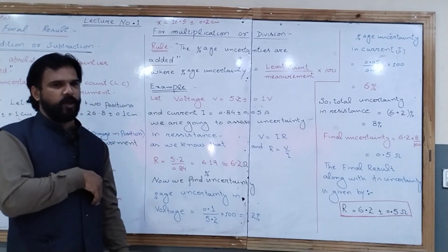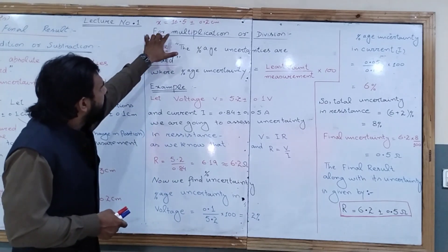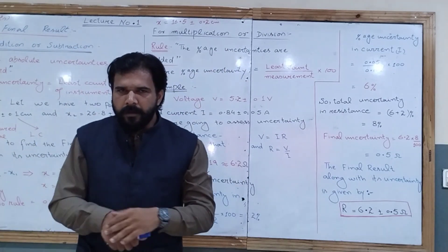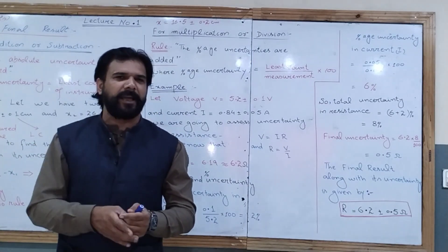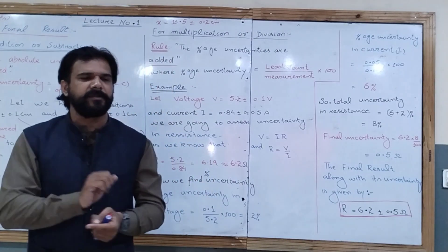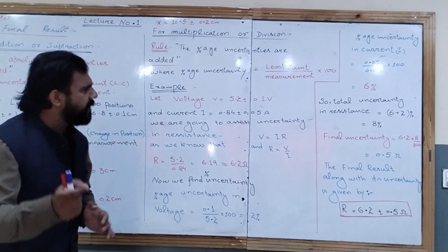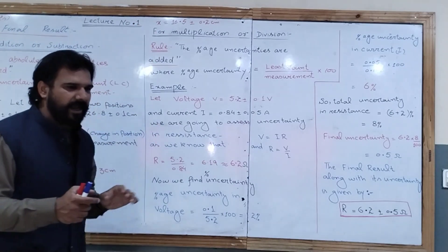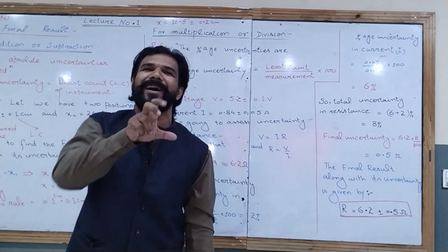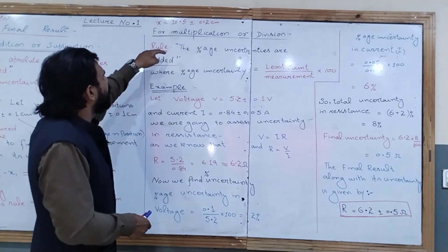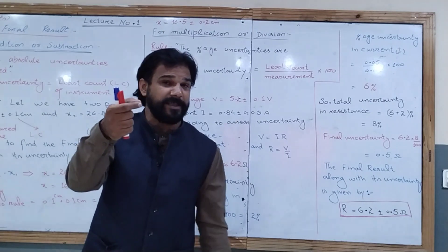Now moving to the second operation: how can we assess the uncertainty for the case of multiplication or division? When we multiply or divide two quantities, the rule is that the percentage uncertainties are added.